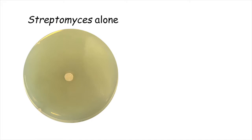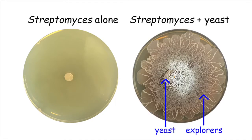When Streptomyces venezuelae is inoculated by itself on a plate containing glucose, it grows vegetatively. But when it is inoculated next to yeast, you can see that the outcome is starkly different. The colony has initiated exploration and now covers the entire plate.